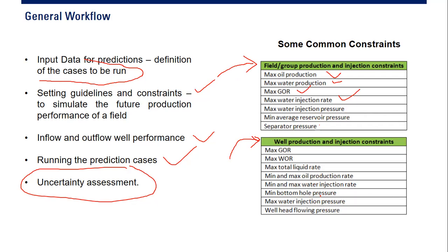For each well we can set maximum GOR, maximum water-oil ratio, maximum total liquid rate, minimum and maximum oil production rate, minimum and maximum water injection rate, minimum bottom hole pressure, maximum water injection pressure, and wellhead flowing pressure. We give these constraints to limit the simulation so that the simulator doesn't give unrealistically high oil production that would deplete the reservoir too fast.